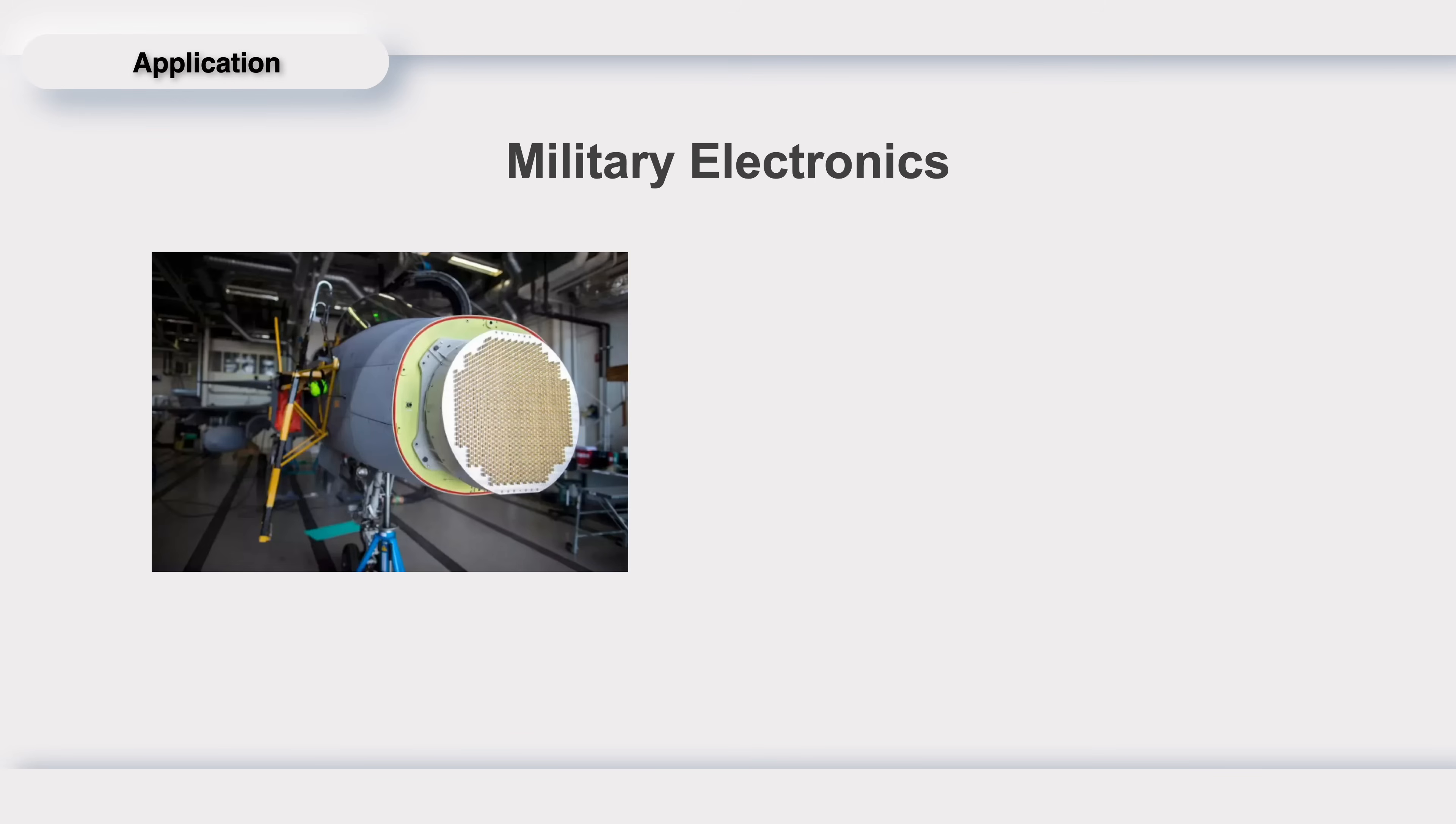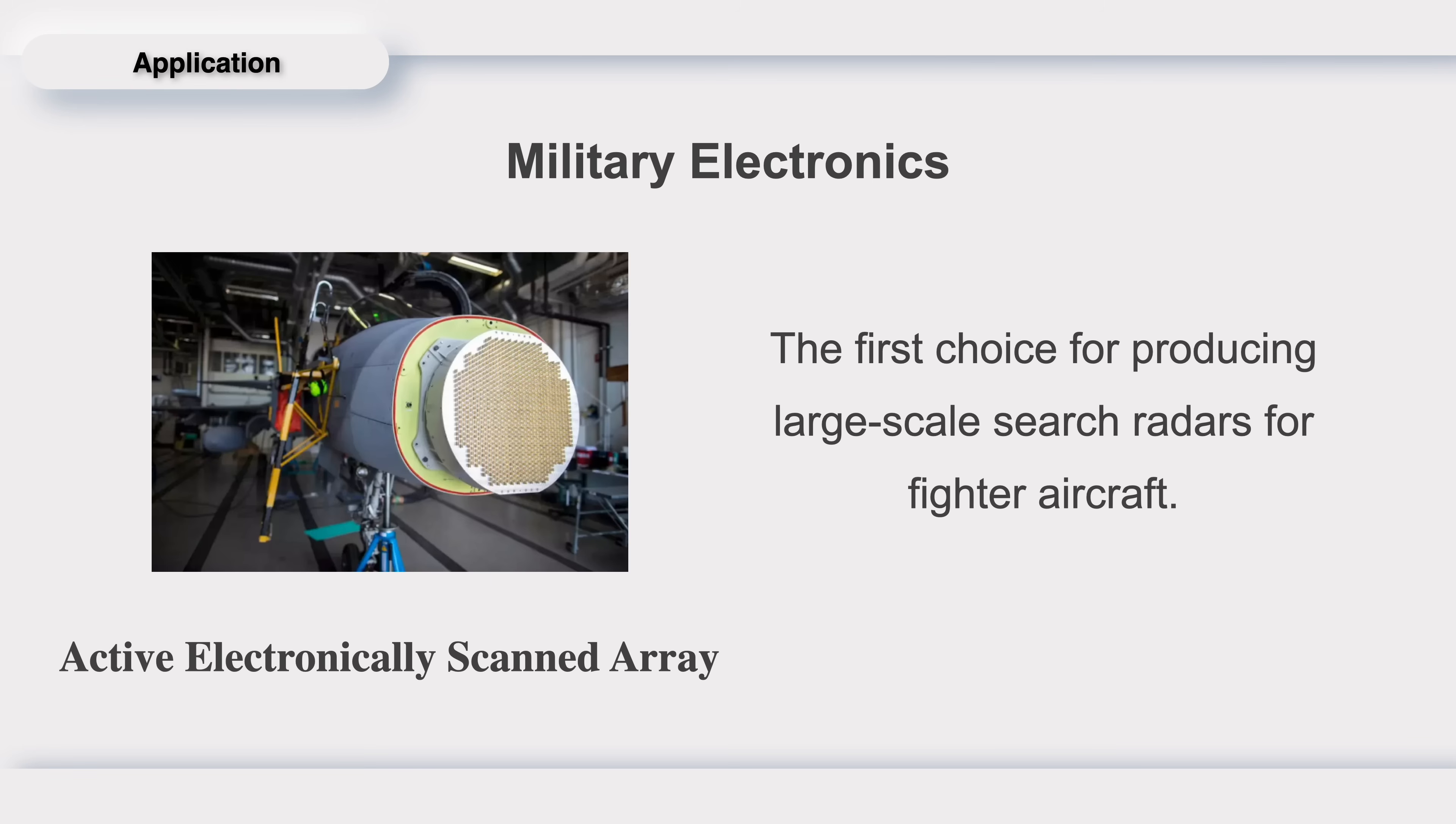For now, GAN components are widely used in many fields. For example, GAN semiconductors can be used in military electronics industry. It's now the first choice for producing large-scale surge radars for fighter aircraft.